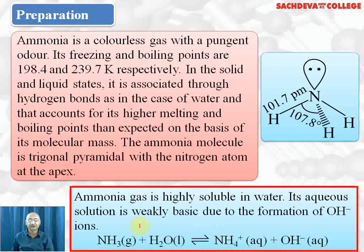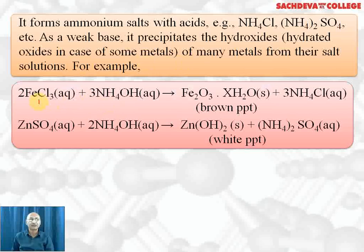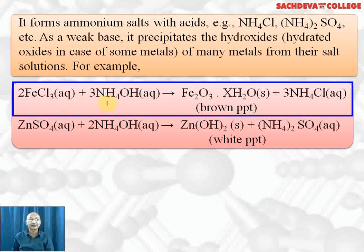Ammonia forms ammonium salts with acids: with HCl it forms ammonium chloride, with H₂SO₄ ammonium sulfate, and with nitric acid ammonium nitrate. As a weak base, it precipitates the hydroxides of some metals in group 3, like aluminium, ferrous, and chromium ions. For example, ferric chloride reacts with ammonium hydroxide to form a reddish-brown precipitate of ferric hydroxide, which on heating gives Fe₂O₃·xH₂O plus ammonium chloride.